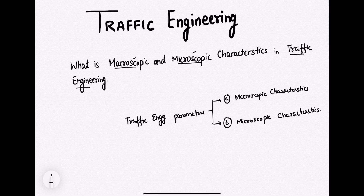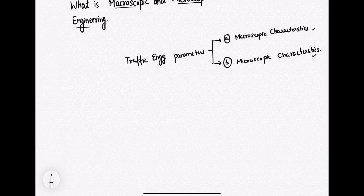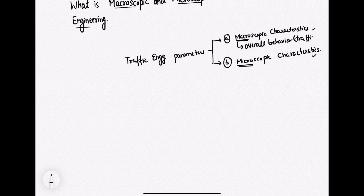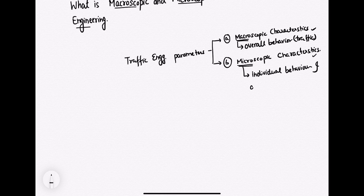Overall, parameters can be categorized into two categories: macroscopic characteristics and microscopic characteristics. As the name suggests, macro means bigger. So when you are considering the overall behavior of traffic, it is called macroscopic characteristics, while when you are considering the individual behavior of a vehicle, it comes under microscopic characteristics.